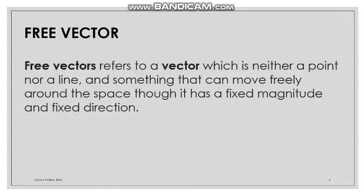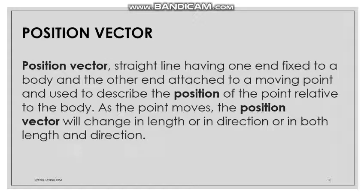A free vector is a type of vector that is not fixed to a point or a line — it can move freely over space. Its magnitude and direction remain fixed, but it can be repositioned freely. We will understand this better by looking at the animation.